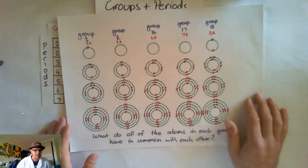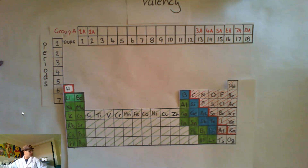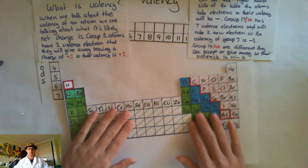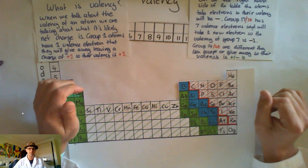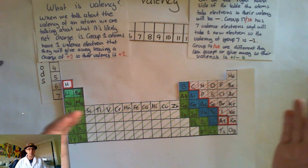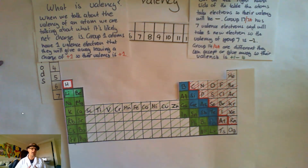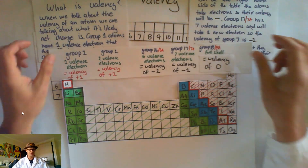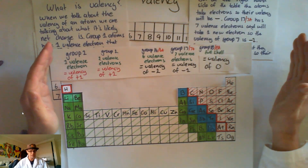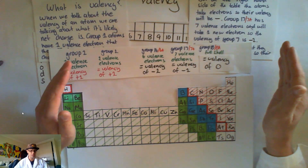Let's talk about valency. When we talk about the valency of an atom, we're talking about its likely net charge. Group one atoms have one valence electron, which means it's really easy for them to give away that one electron to make a full shell. So their valency — their charge once they give away that electron — is plus one. Group two has two valence electrons; it's easier to give those two away than to attract six, so they give them away and their valency is plus two.